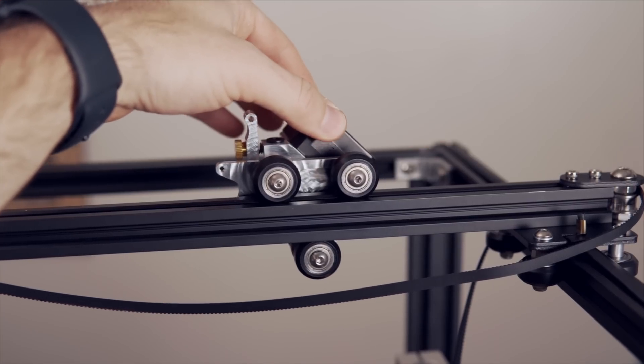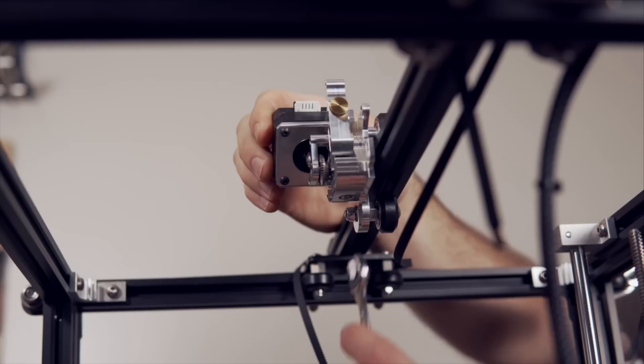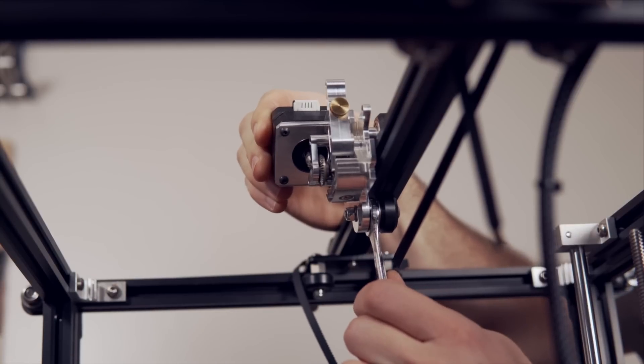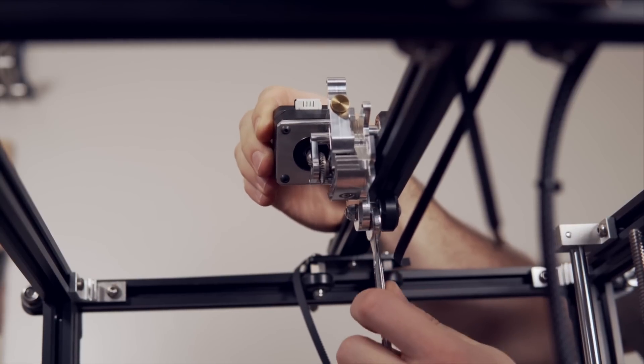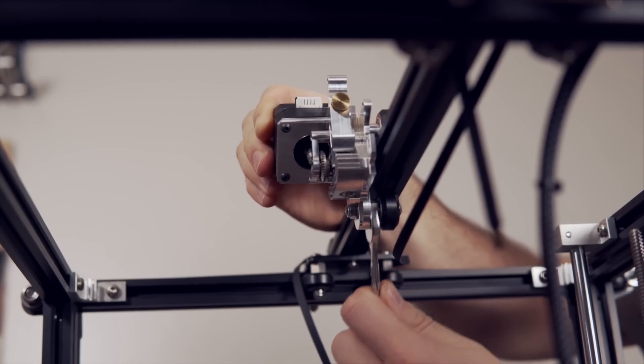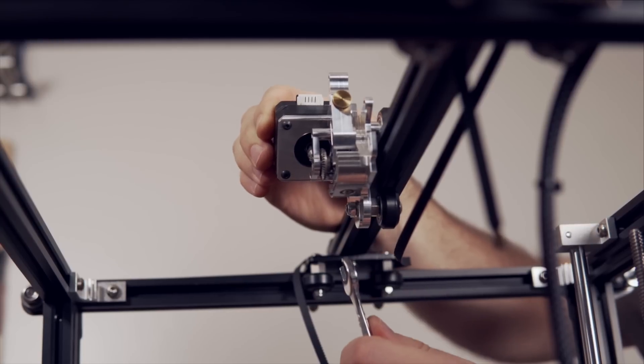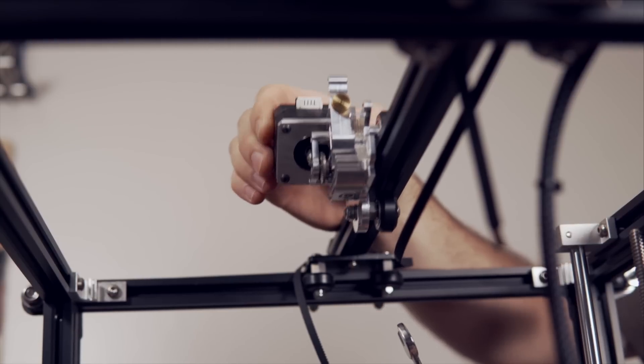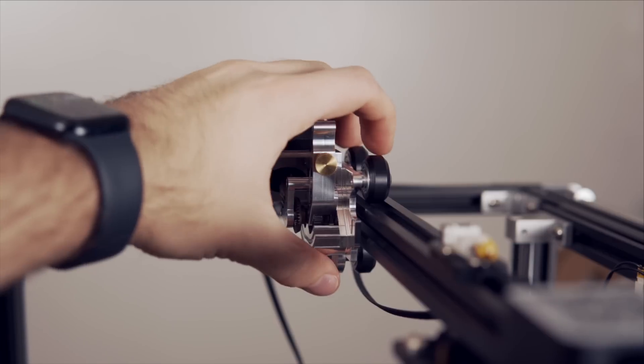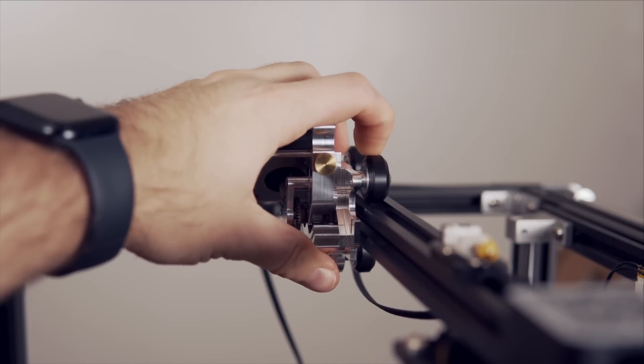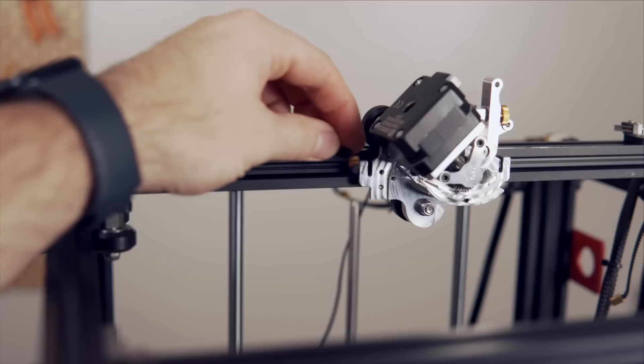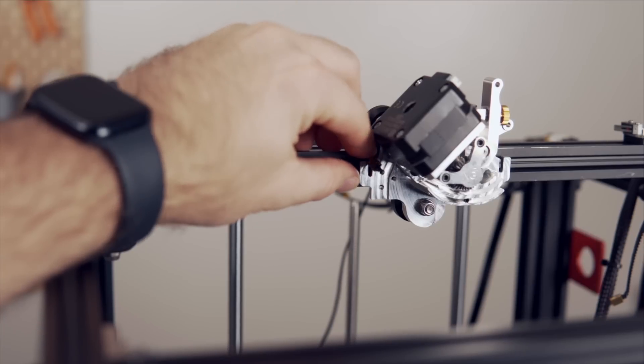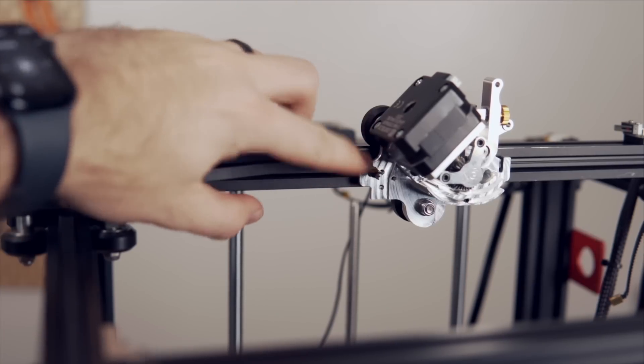We need to take a 10mm wrench and adjust the eccentric nut on the bottom side of the extruder. I found it easiest to wiggle the extruder while you are tightening the eccentric nut a fraction of a turn, and as soon as that wiggle is gone, you are good to go. You don't need to keep turning it. You don't want to force additional pressure on that wheel into the extrusion.